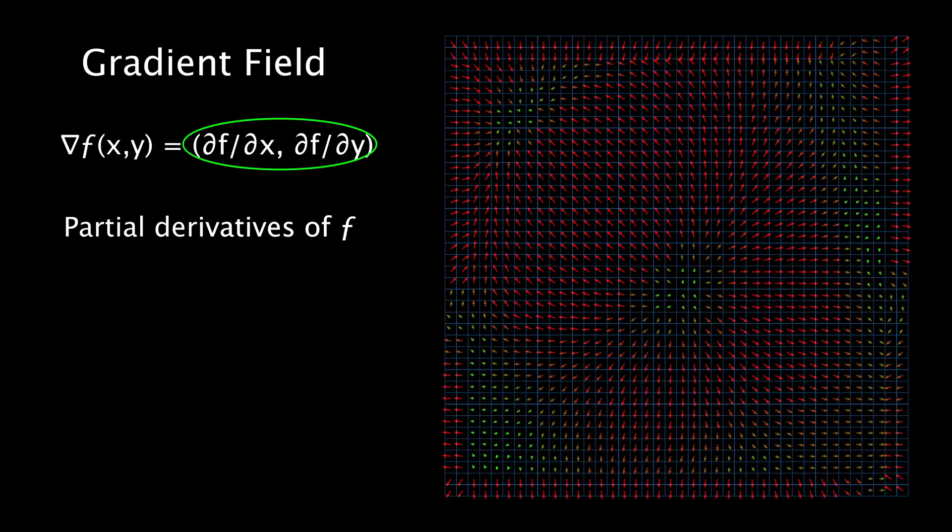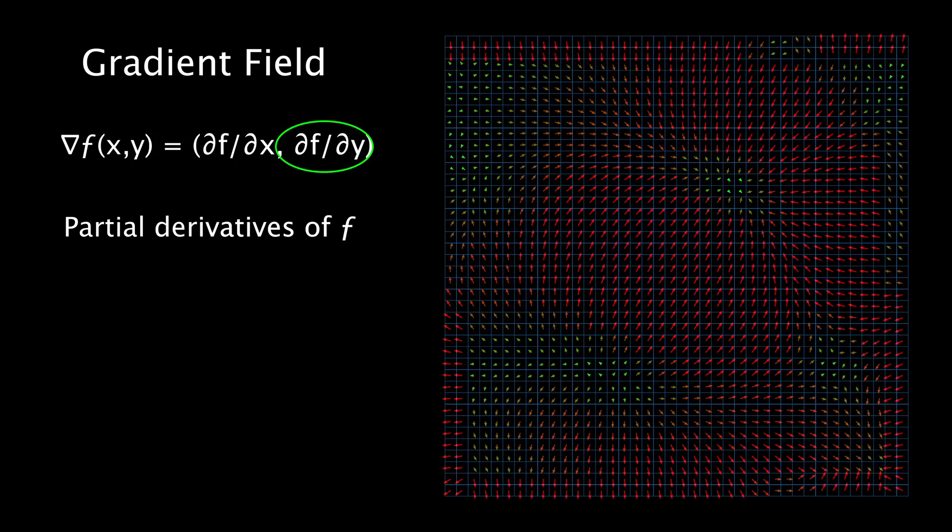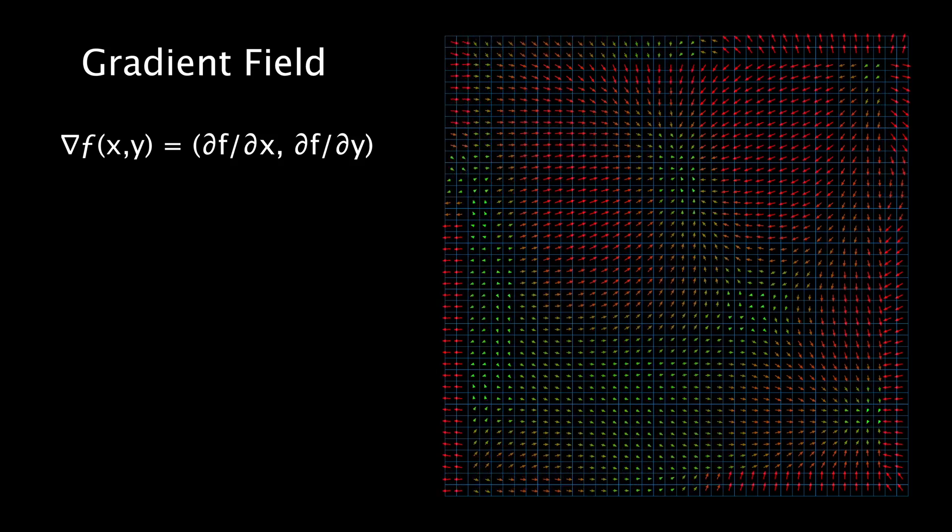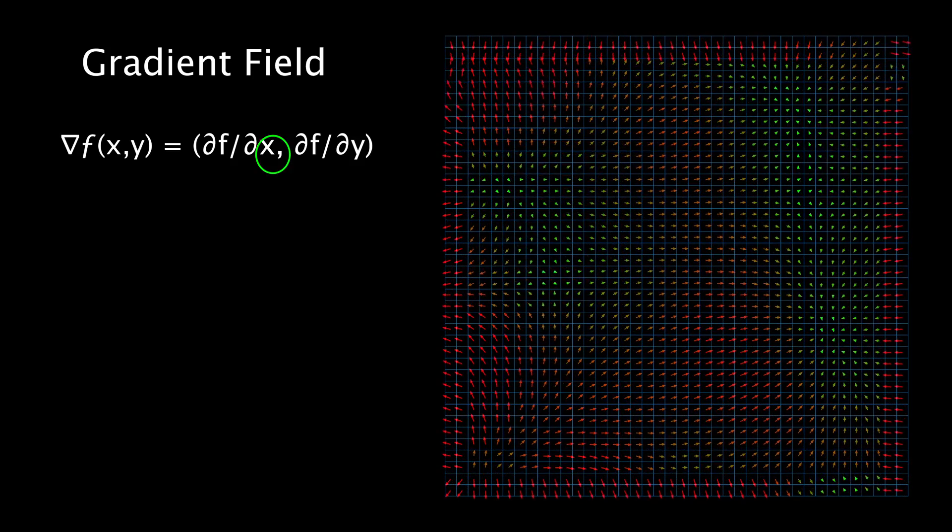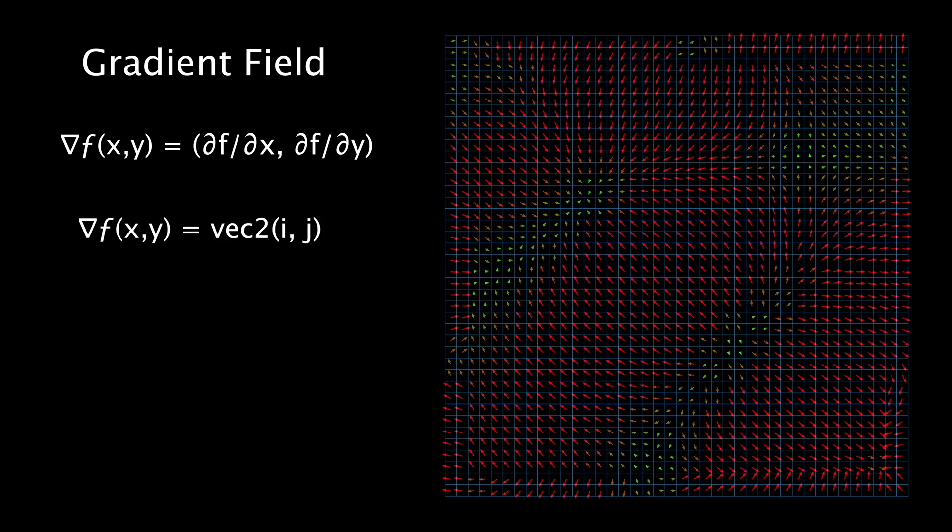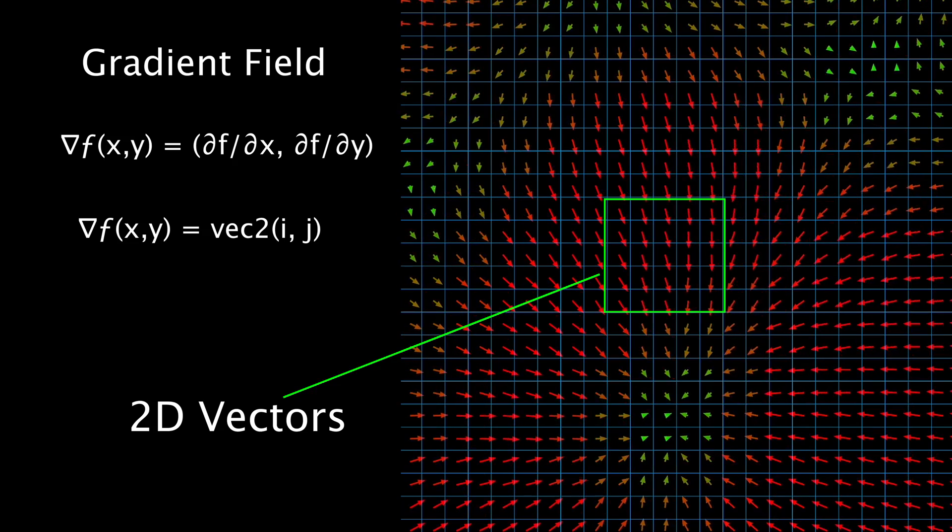On the right side, we have the partial derivatives of f. Partial derivative of f on x, and partial derivative of f on y. As you can see, the two operations are separated by a comma, which denotes that the output is a vector with two components. In fact, the gradient field is a grid containing a vector in each cell.